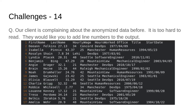Challenge number 14: our client is complaining about the anonymized data — it is too hard to read. They would like us to add line numbers to the output. We could just take the solution from challenge 13 and pipe it into a one-liner AWK script — AWK piping to AWK — and that would add our line numbers. That would be perfectly acceptable, and in the real world that's probably what I would do. However, for purposes of teaching and demonstration, we are going to write a script that will add line numbers and anonymize the data all in one command — just one AWK script to do it all.